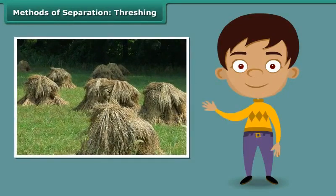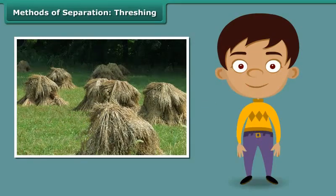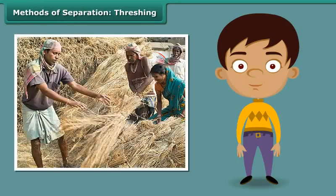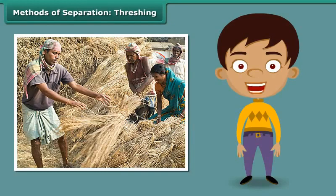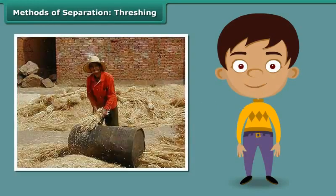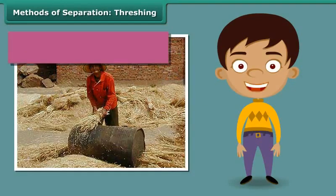You must have seen bundles of wheat or paddy stalks lying in fields after harvest. Have you pondered how a farmer separates the grains from these stalks? Once the wheat or paddy crop is harvested, the farmer ties the stalks together to form bundles. He then leaves the bundles to dry in the sun. Once the stalks are completely dried, the farmer beats them against a hard floor to free the grains. This process of separating grains from stalks is known as threshing.